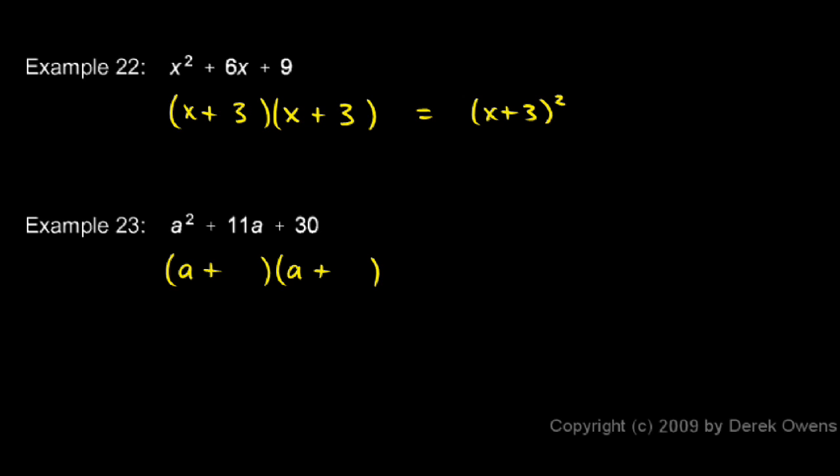So we think, what two numbers add up to 11 and multiply to 30? And you might be able to see a plus 6 times a plus 5.